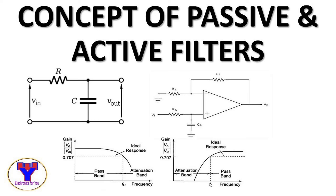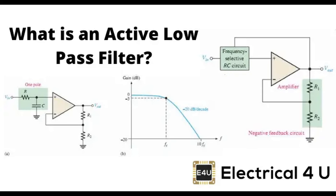Filters in electronics are typically categorized based on the frequency range they affect and their design approach. The main types of filters include: 1. Low-Pass Filter — allows low-frequency signals to pass while attenuating high-frequency signals. Applications include reducing high-frequency noise in audio signals, filtering out unwanted frequencies in power supplies, and in anti-aliasing filters for data acquisition systems.